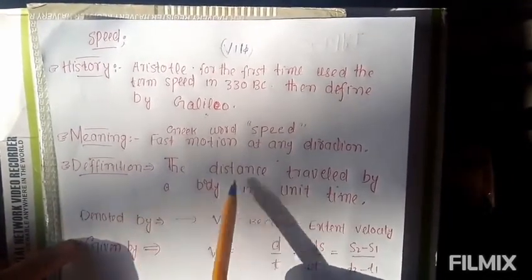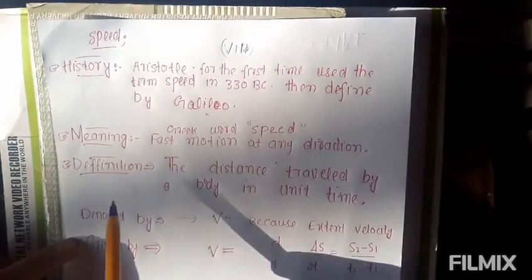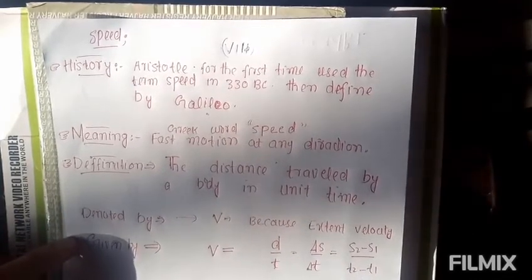Now come to the definition. The distance travelled by a body in unit time is called speed. Actually when a body covers some distance in a unit time then it is known as speed.